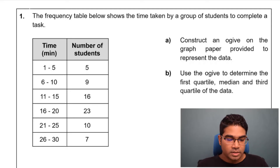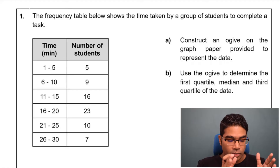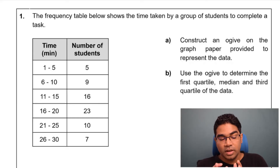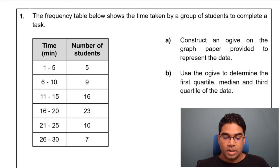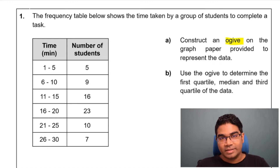Let's start by trying to draw an ogive from a given data set. The frequency table below shows the time taken by a group of students to complete a task. We have grouped data here — time in class intervals and the number of students for each class interval. Construct an ogive on the graph paper provided to represent the data.